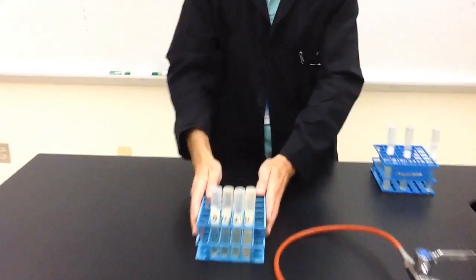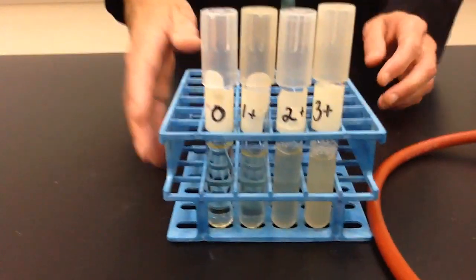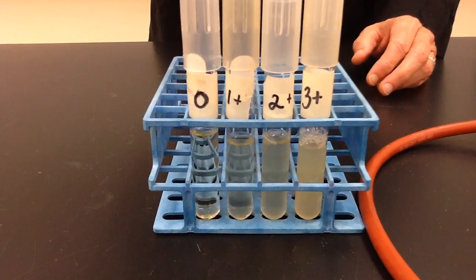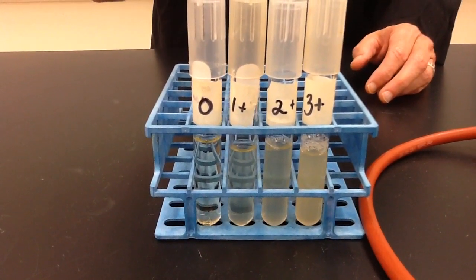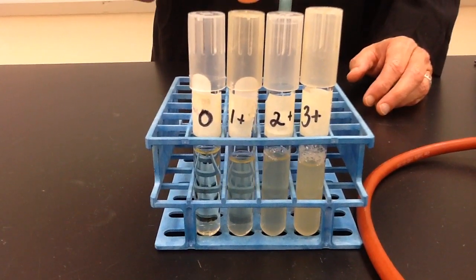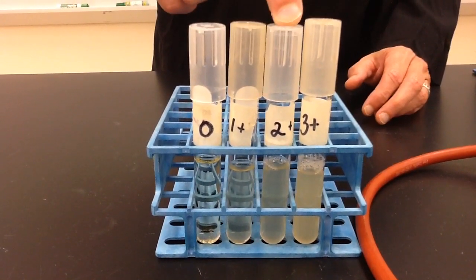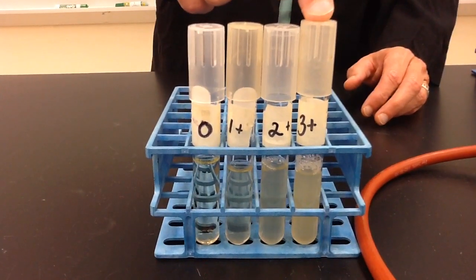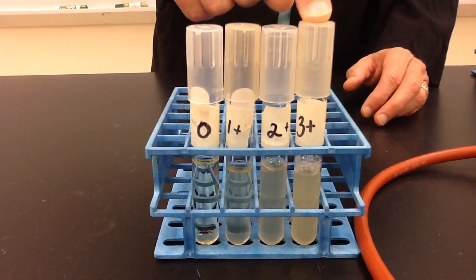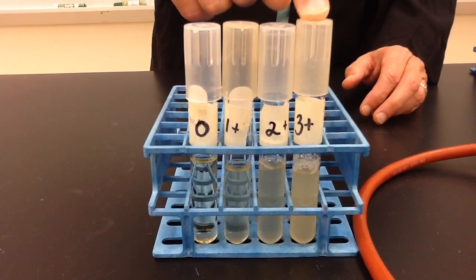But just to remind you of how the growth is going to be scored, if you have perfectly clear, you're going to call that a zero when you do your temperature. One, a little bit cloudy. Two, more cloudy. And then finally, a 3 plus is going to be where you can't read anything through that tube.